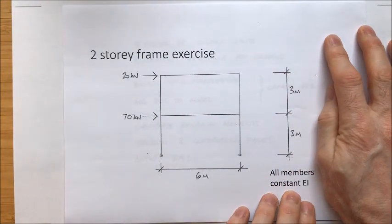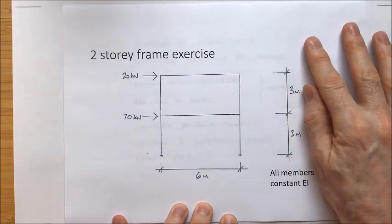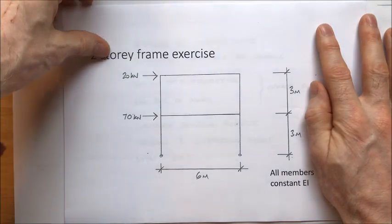Here I've just made an assumption that all members are constant EI. We've got rather small storey heights, but this is an exercise, and now we can get on with the analysis.